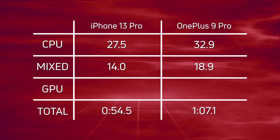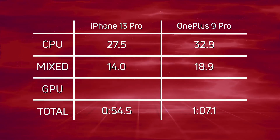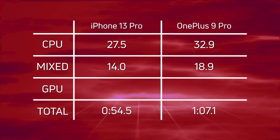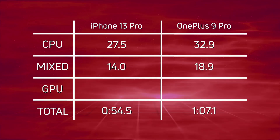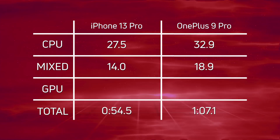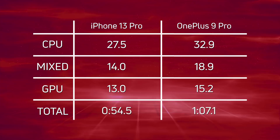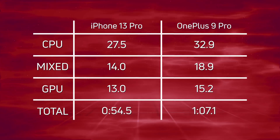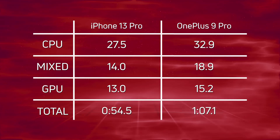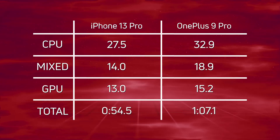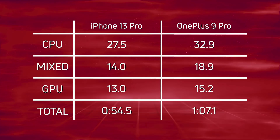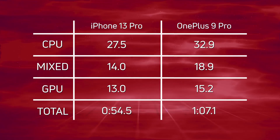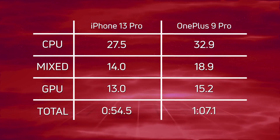Mixed CPU/GPU: 14 seconds versus 18.9 seconds, a difference of 4.9 seconds. And then when it comes to that final Unity test: 13 seconds versus 15.2 seconds, a difference of 2.2 seconds. When you add up all those differences, that's a total gap of 12.6 seconds.